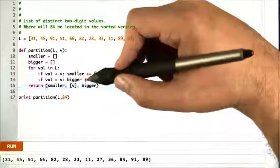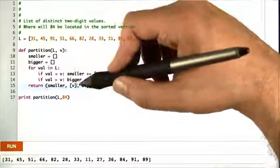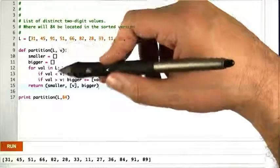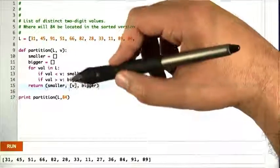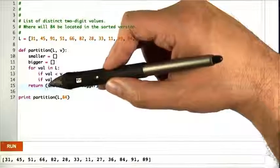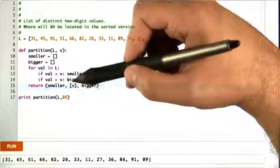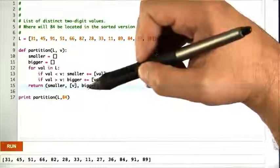To solve this problem, we're going to modify partition a little bit so that instead of just building a list, it separates it out into three chunks: the ones that are smaller than v, the chunk that is v, and the ones that are bigger than v.